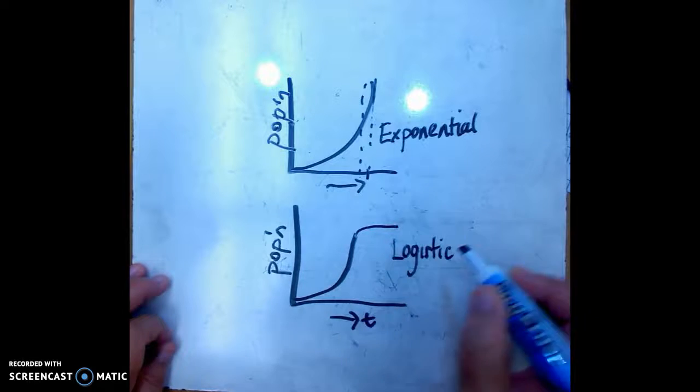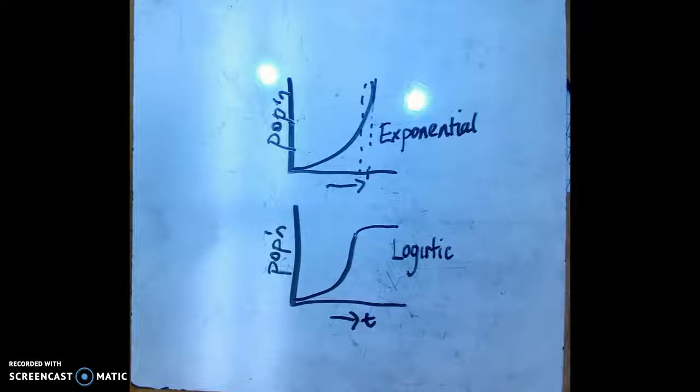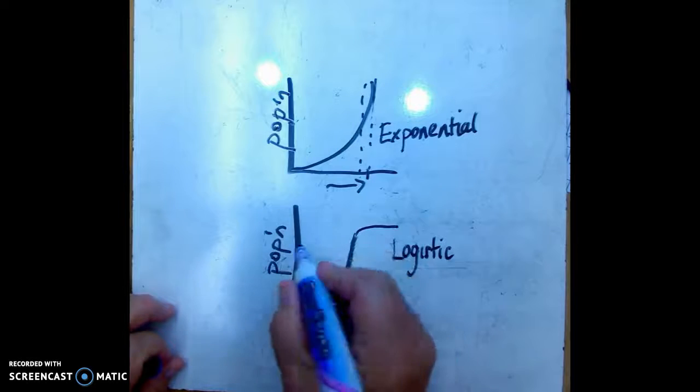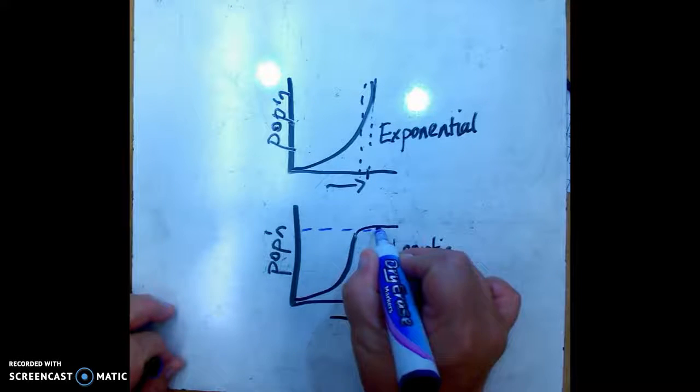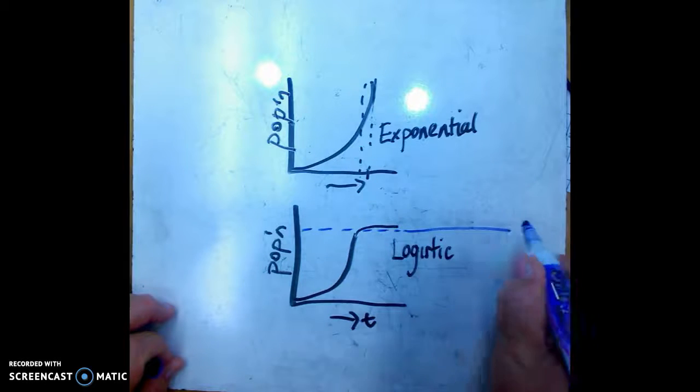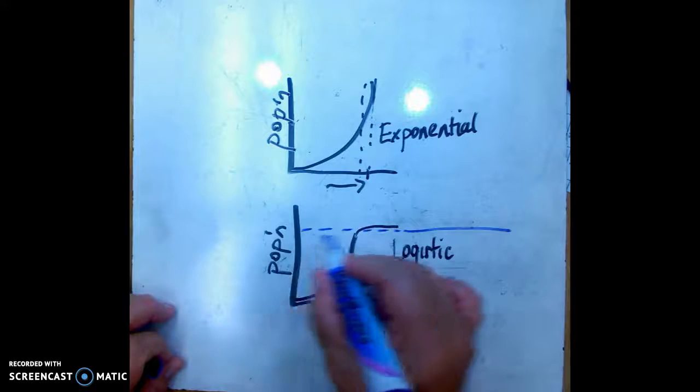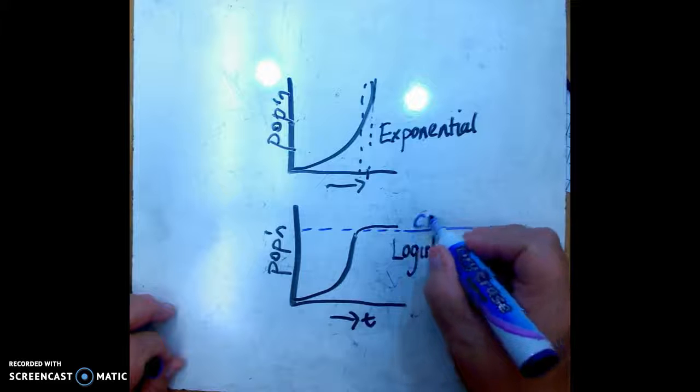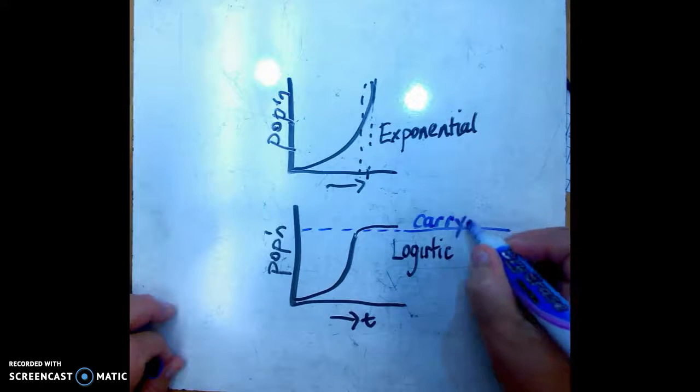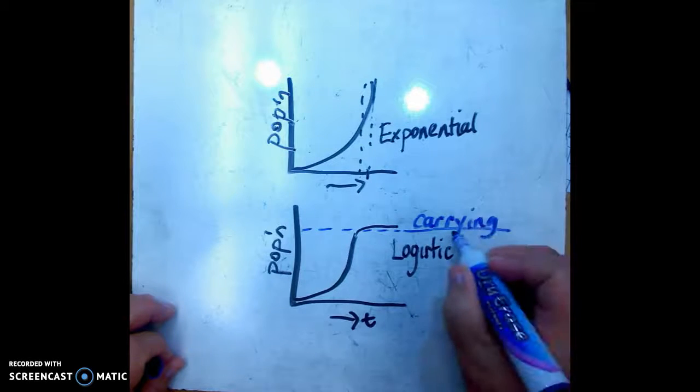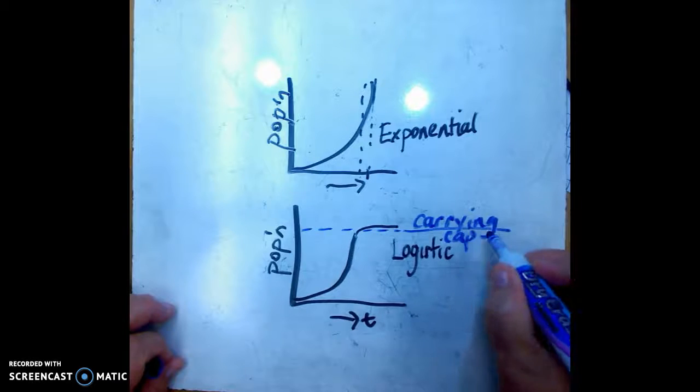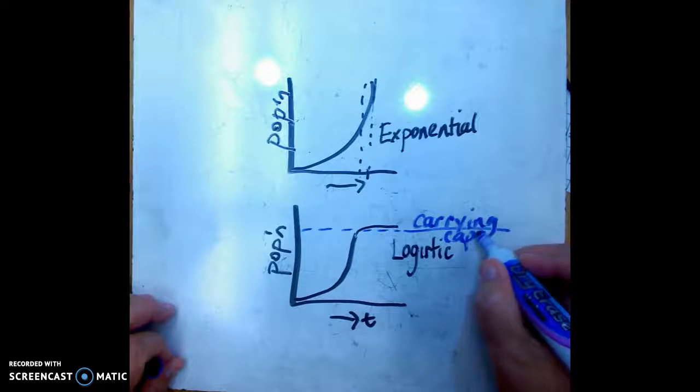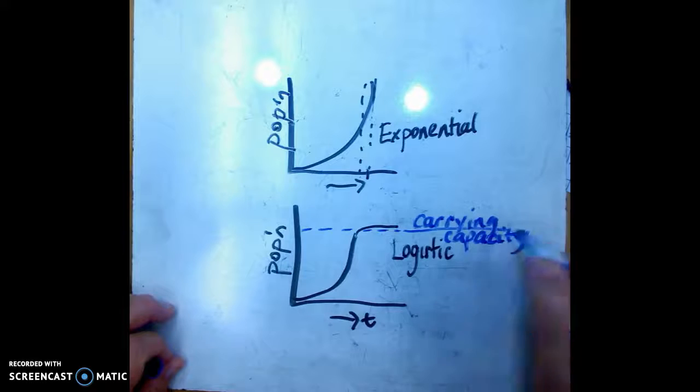And when it levels off like that, then that's generally where the population is going to stay quite stable. This part of the graph where it levels off is called carrying capacity, and that's the number of organisms that an environment can handle.